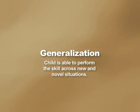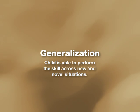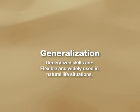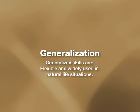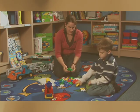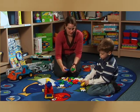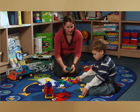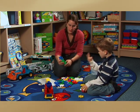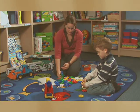Once a child learns a skill, we consider it to be generalized when the child is able to perform the skill across new and novel situations. All of the skills that the child learns should be flexible and widely used in natural life situations. For example, a child should be able to count blocks while sitting on the floor with a therapist, or count baking ingredients while cooking with his or her parent.